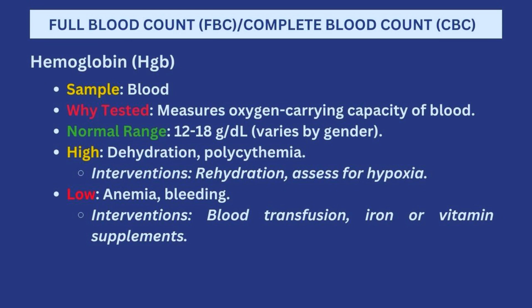You also have to start assessing the patient for hypoxia — check the oxygen saturation levels using your pulse oximeter. If the hemoglobin levels are low, that means there is anemia, and it could be that the person is bleeding — possibly internal or external. In that situation you would be thinking of blood transfusion, or whether iron or vitamin supplements need to be prescribed for that patient.